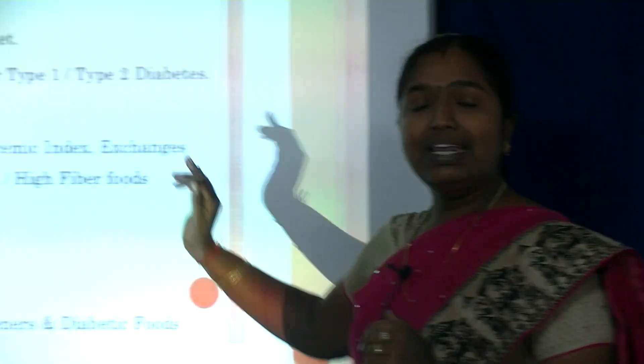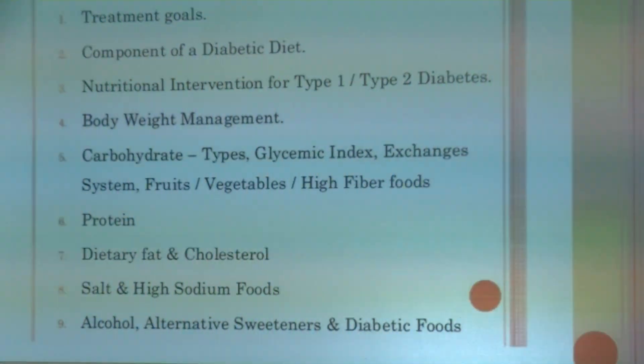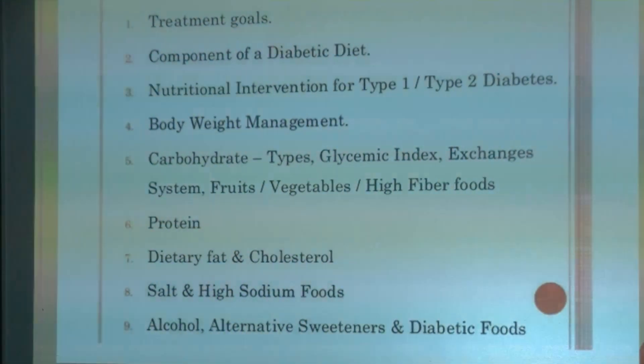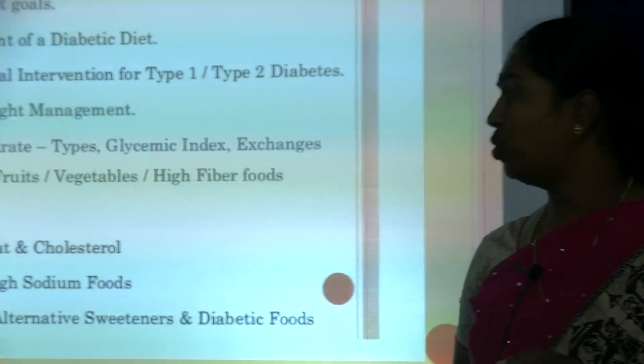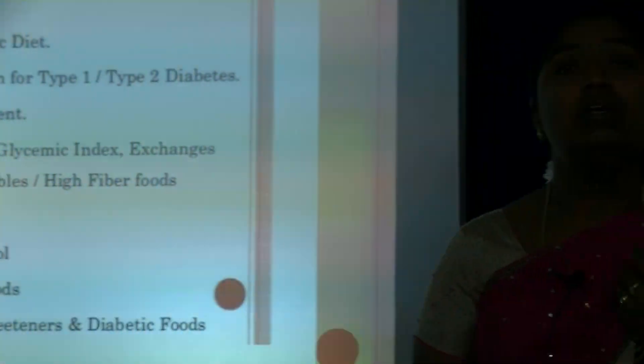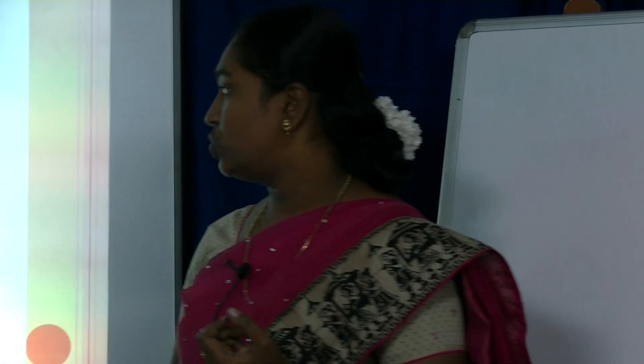The patient should follow an energy exchange system with high fiber foods. For protein, high quality protein with essential amino acids should be consumed — from sources such as meat, chicken and other proteins. Regarding dietary fat and cholesterol, the patient should take unsaturated fats. When the patient is hypertensive, salt and sodium intake must be restricted.